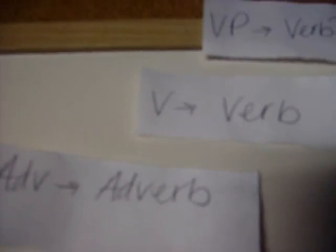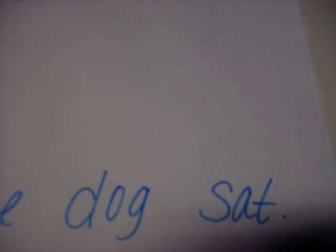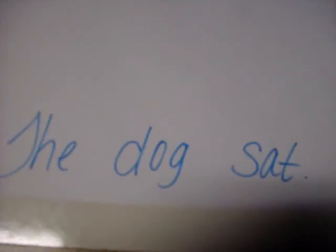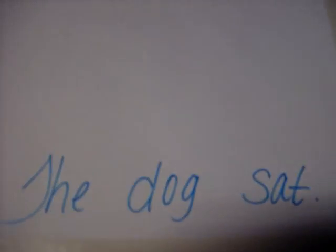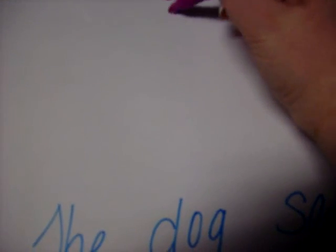So let's try some tree diagrams for some practice. Here's our first sentence: 'The dog sat.' If we wanted to diagram this sentence, we would start like this. At the top of our tree is our node for sentence.